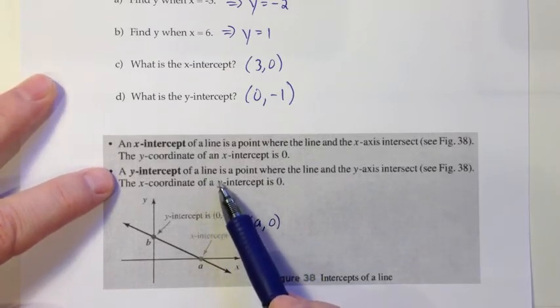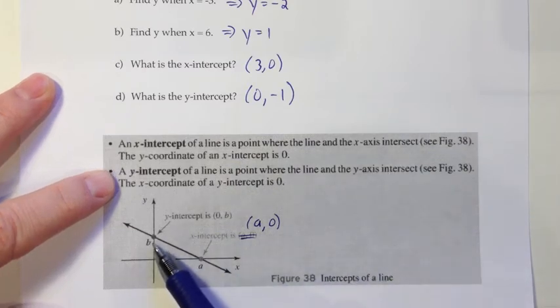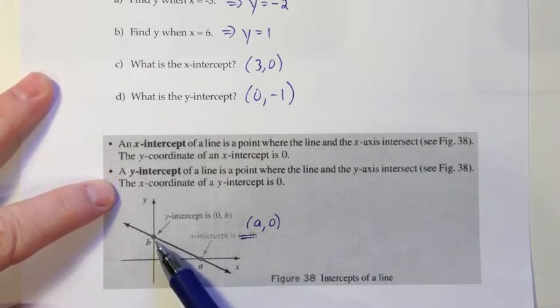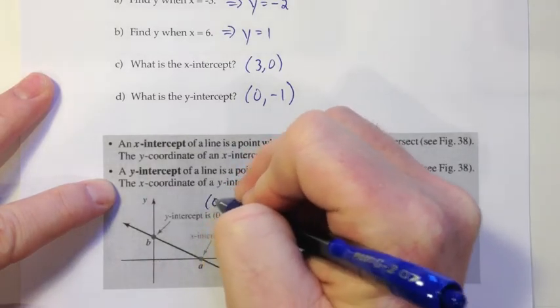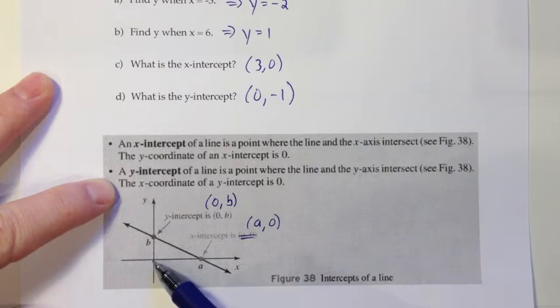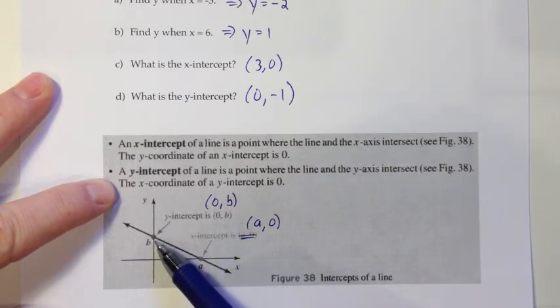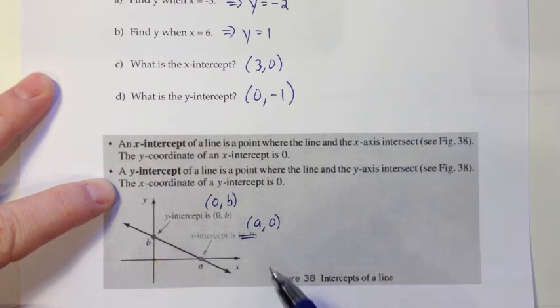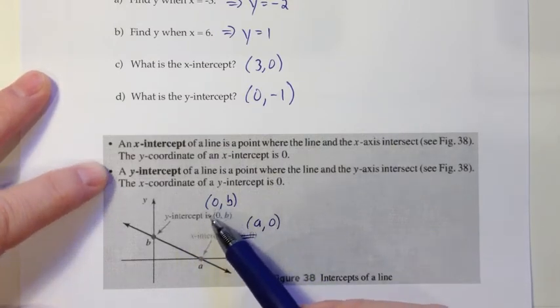And then the y-intercept is the point where the line and the y-axis intersects. So that would be this one right here. And the x-coordinate of the y-intercept is always a 0. And again, I don't know if you can see that really well, so I'll rewrite it. It's (0, b). But we're not going over to the right or to the left. We're only going up b. So the x-coordinate is a 0, and then the y-coordinate is whatever this height is. And so for x-intercepts, we will always get a 0 for the y-value. And for y-intercepts, we'll always get a 0 for the x-value.